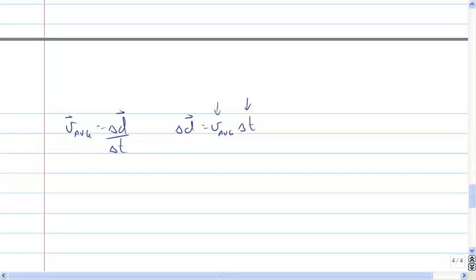I know that the average velocity is just V1 plus V2, all over 2.